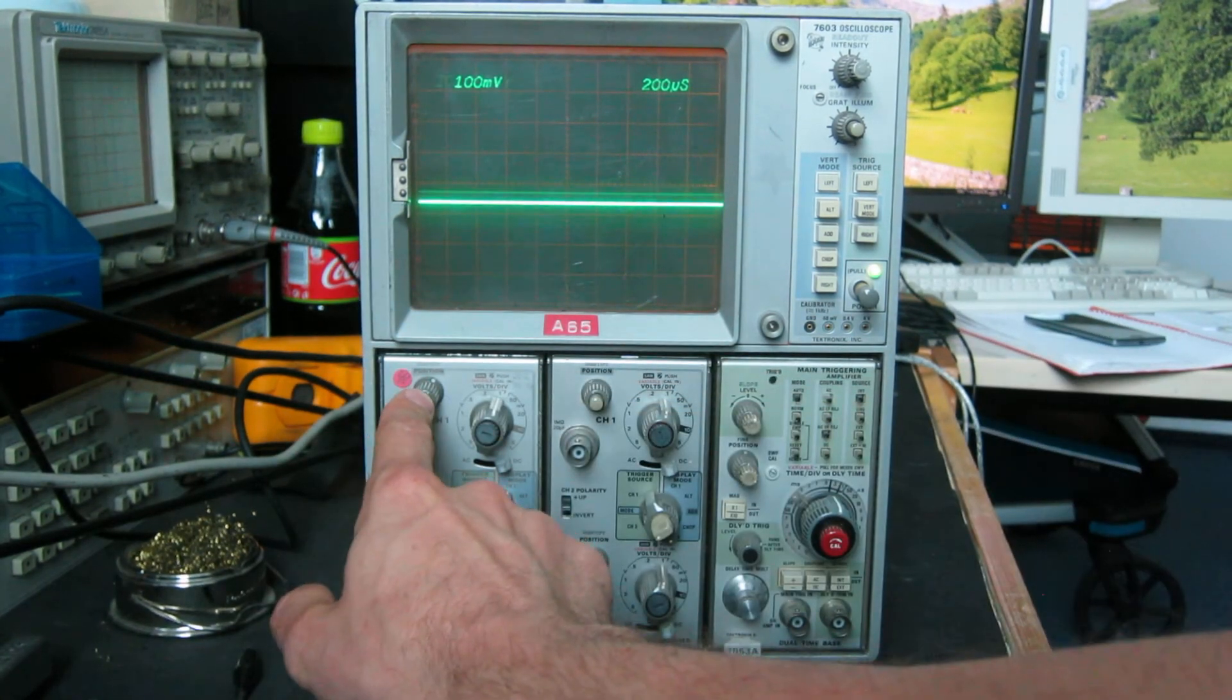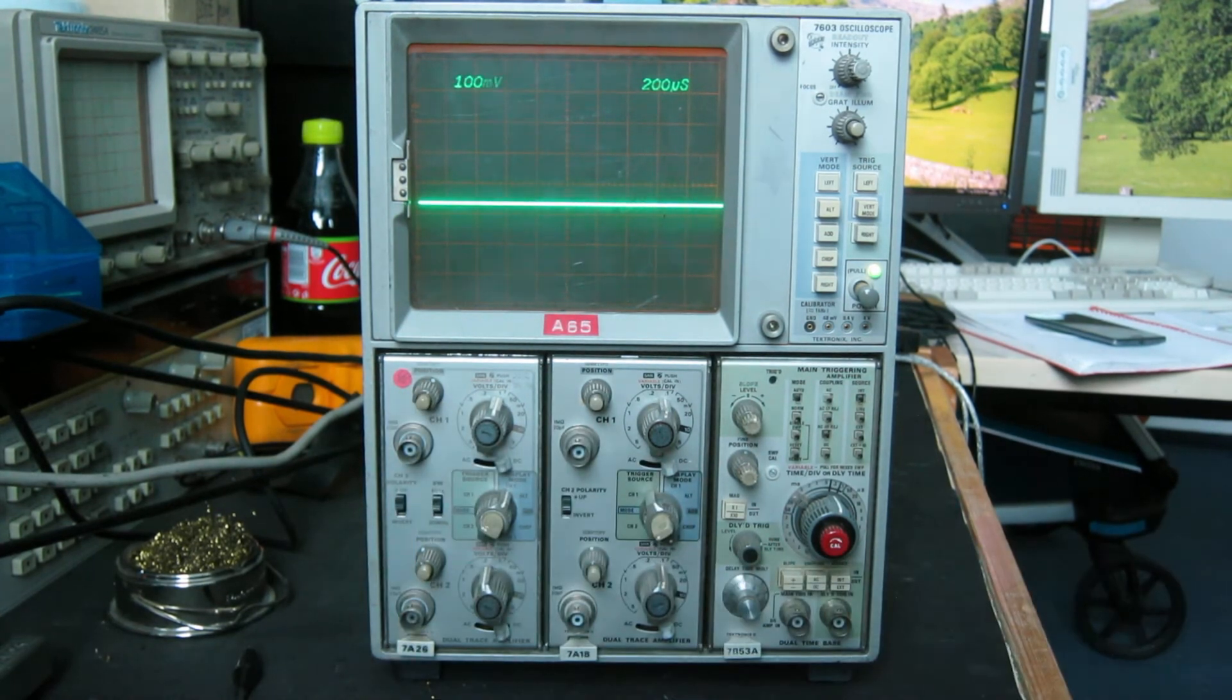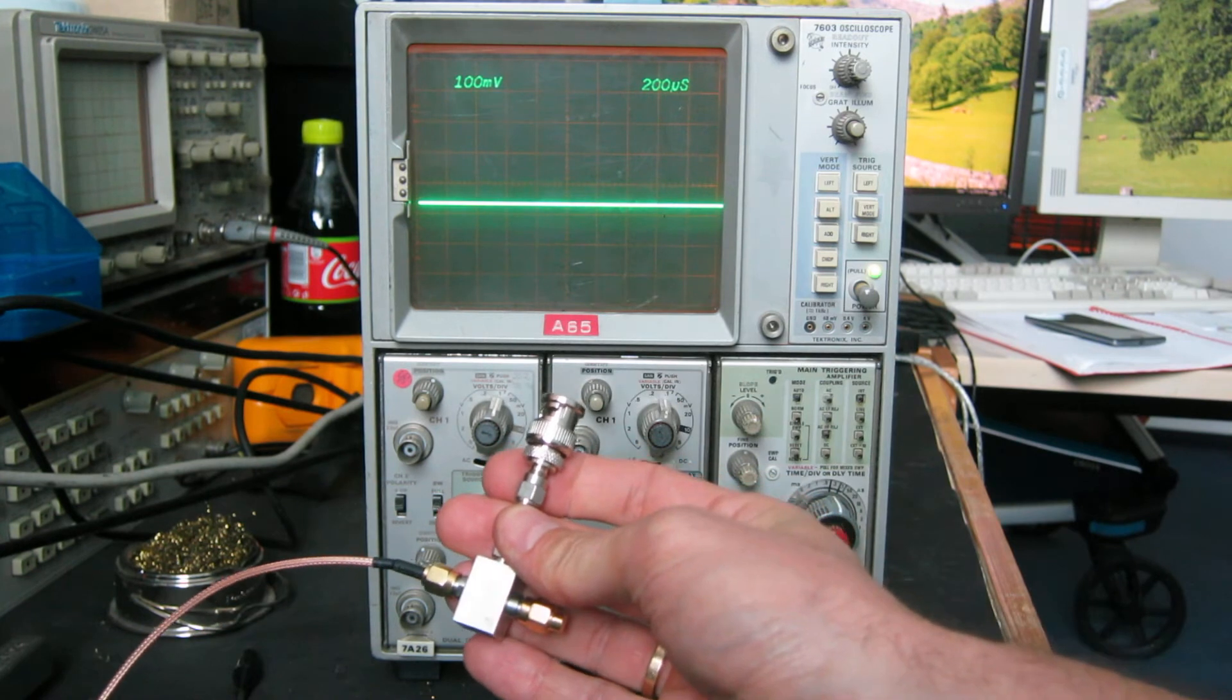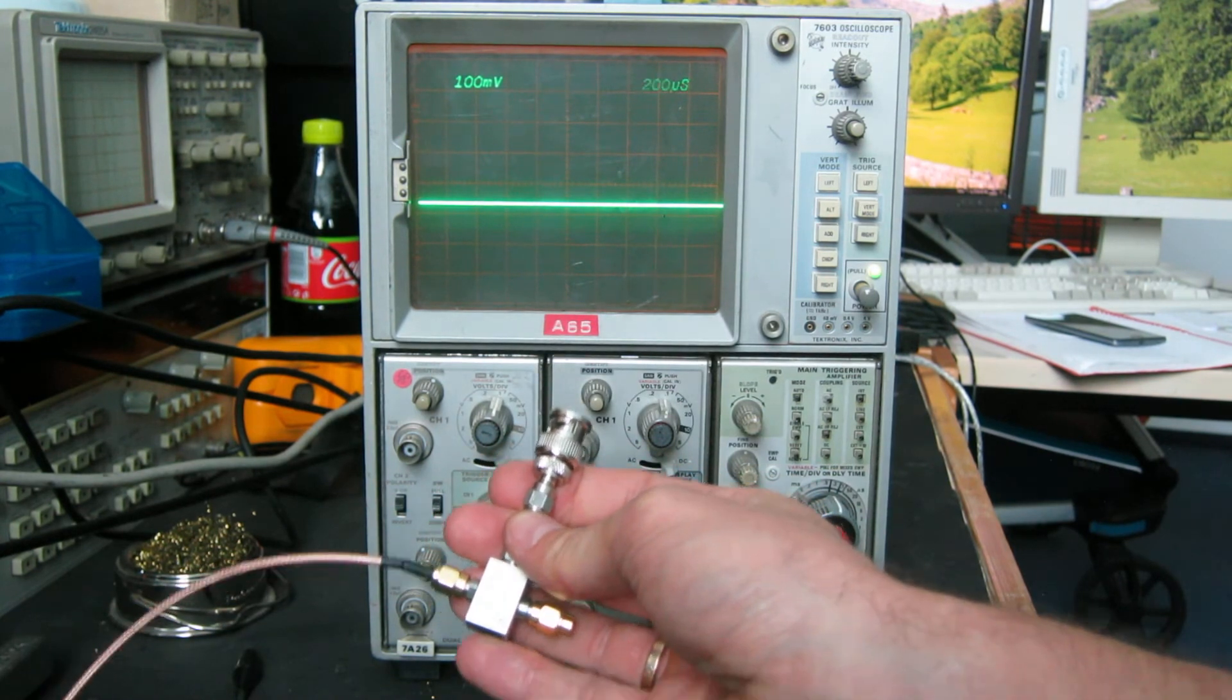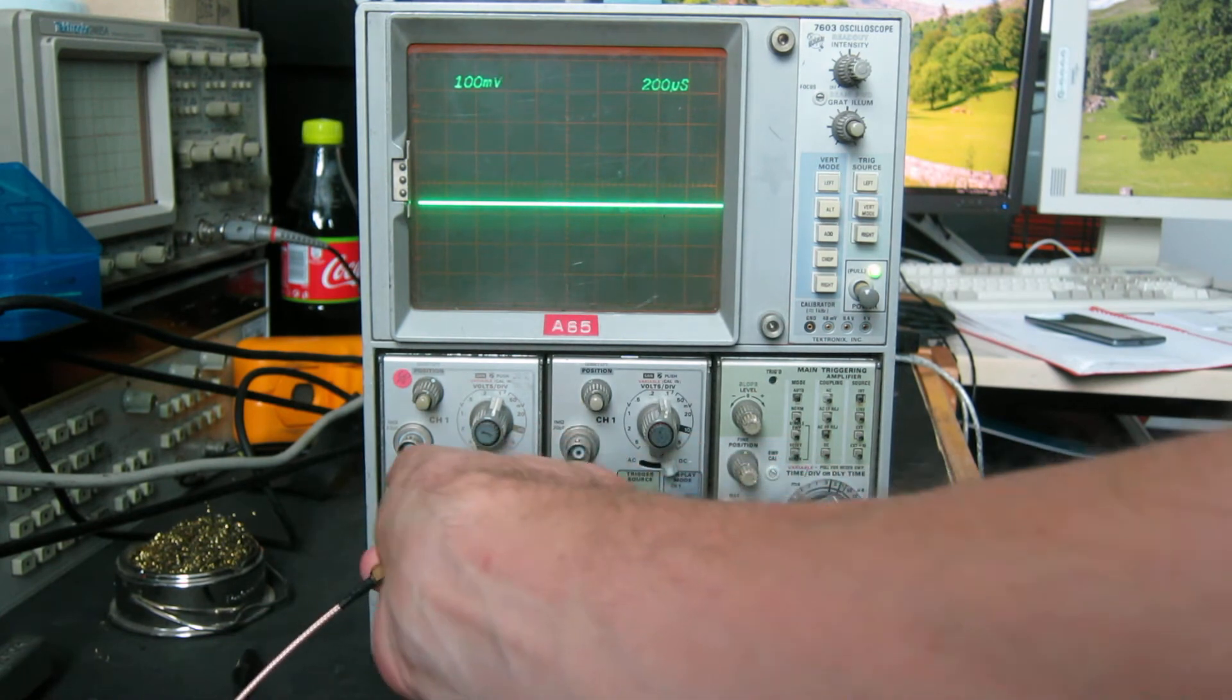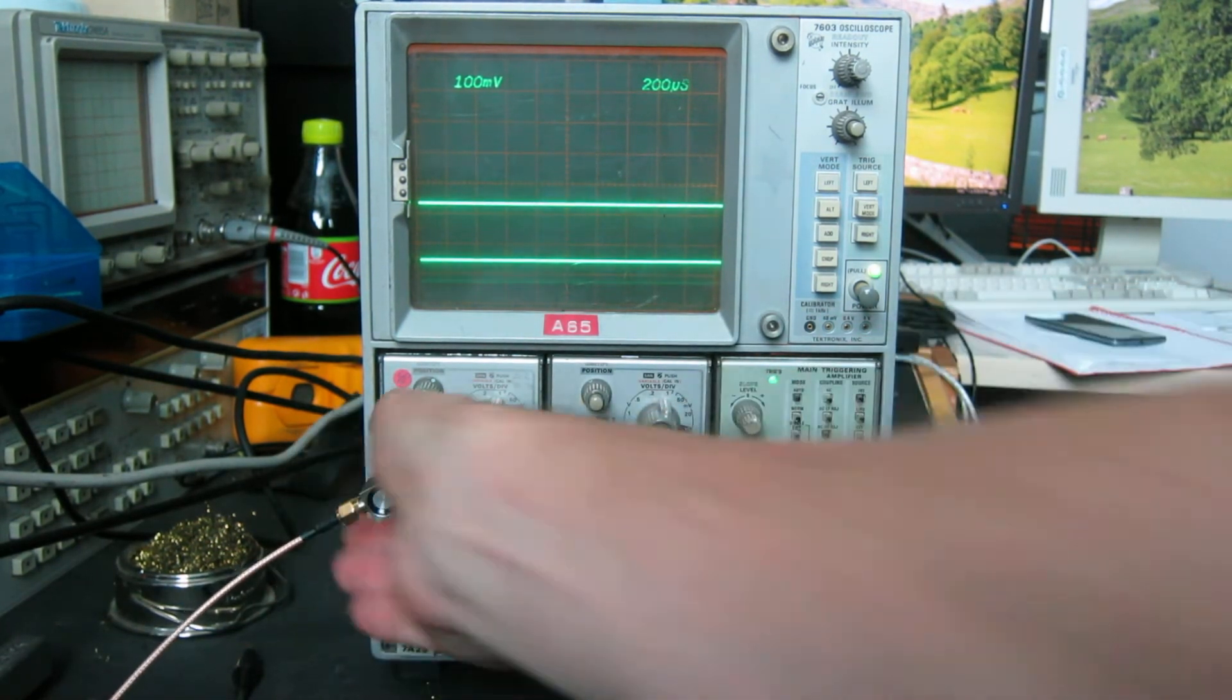Notice you can press the identify button to see which trace it is. This is connected to a very fast pulse generator with a rise time of like 16 picoseconds. It's not perfectly terminated, but it'll give us an idea of the scope rise time and let us estimate the bandwidth.